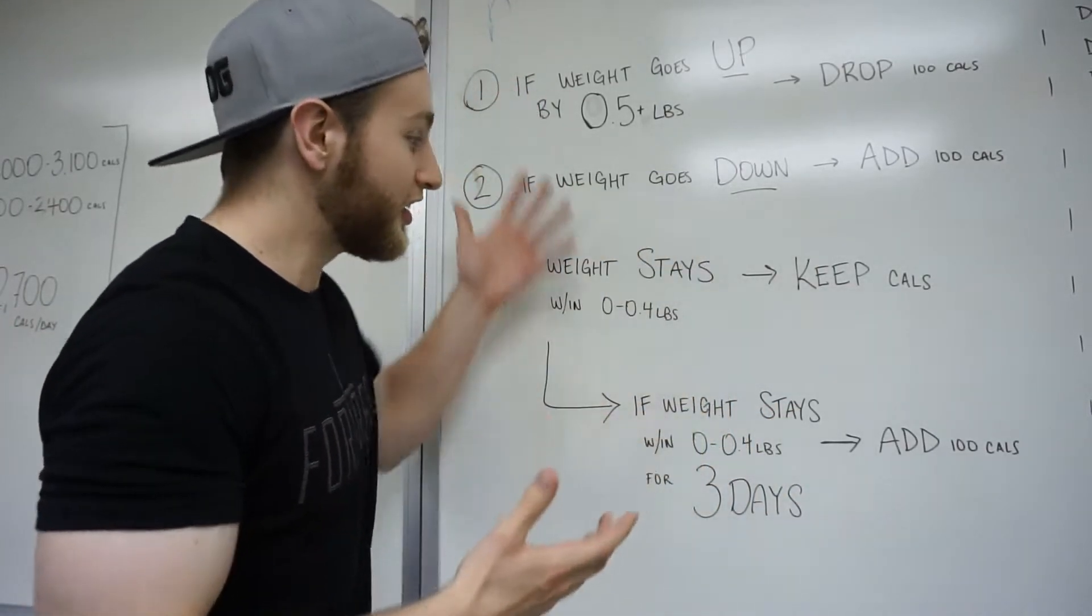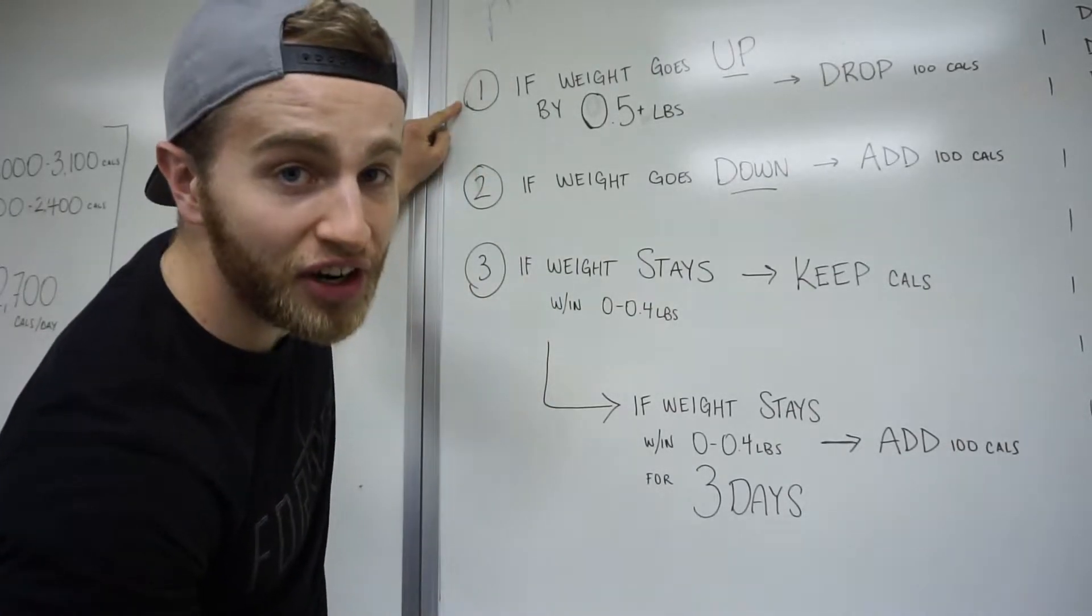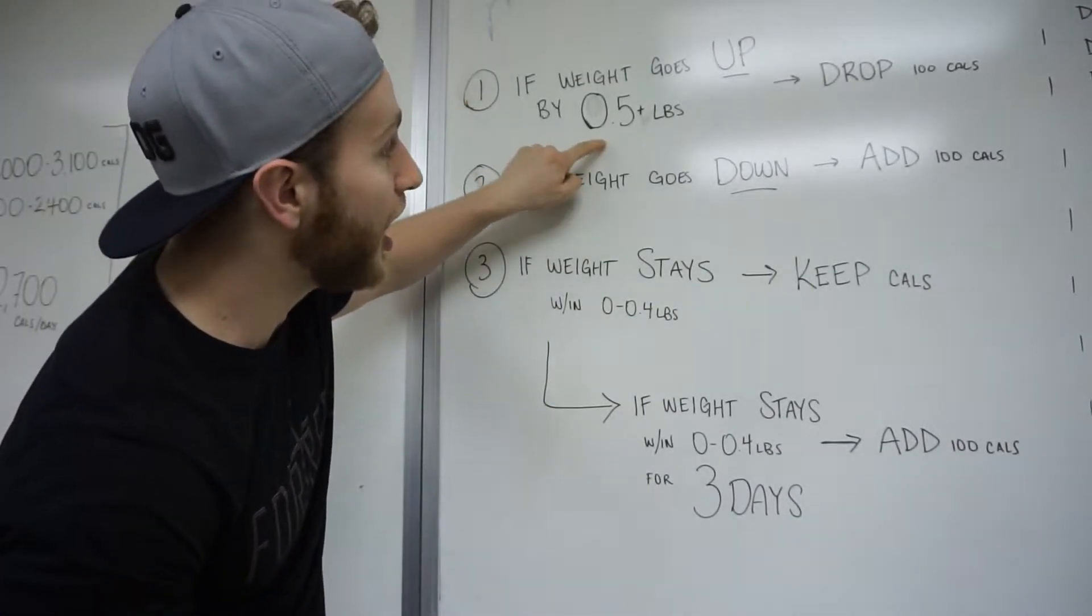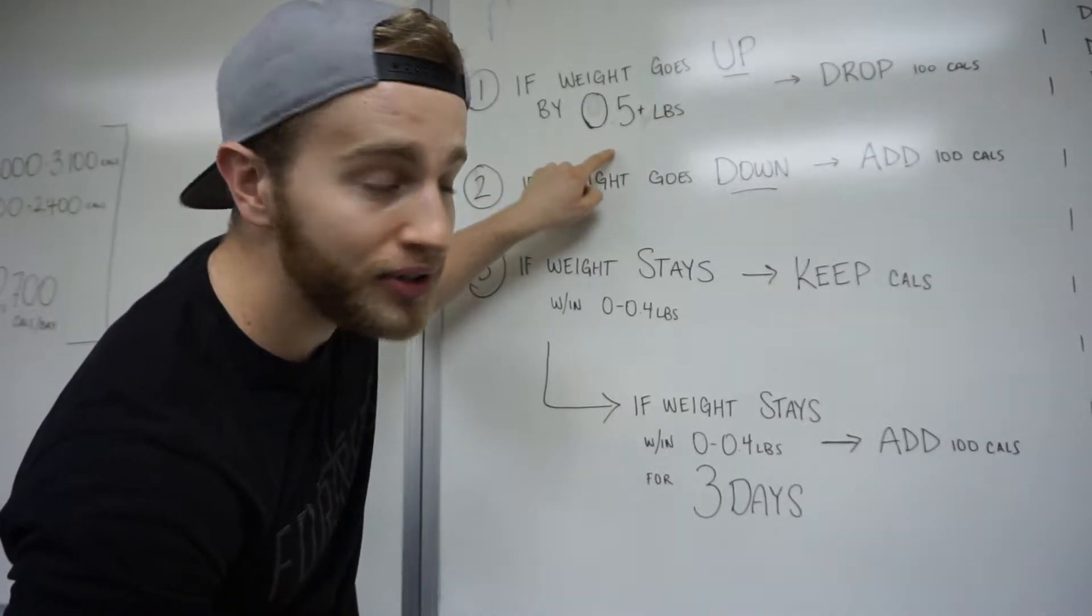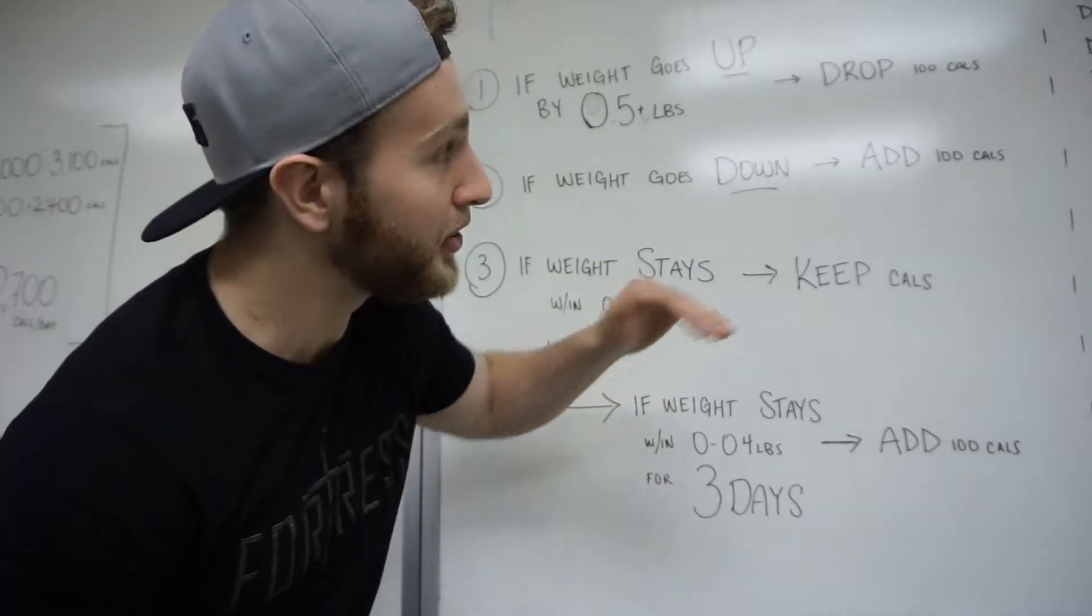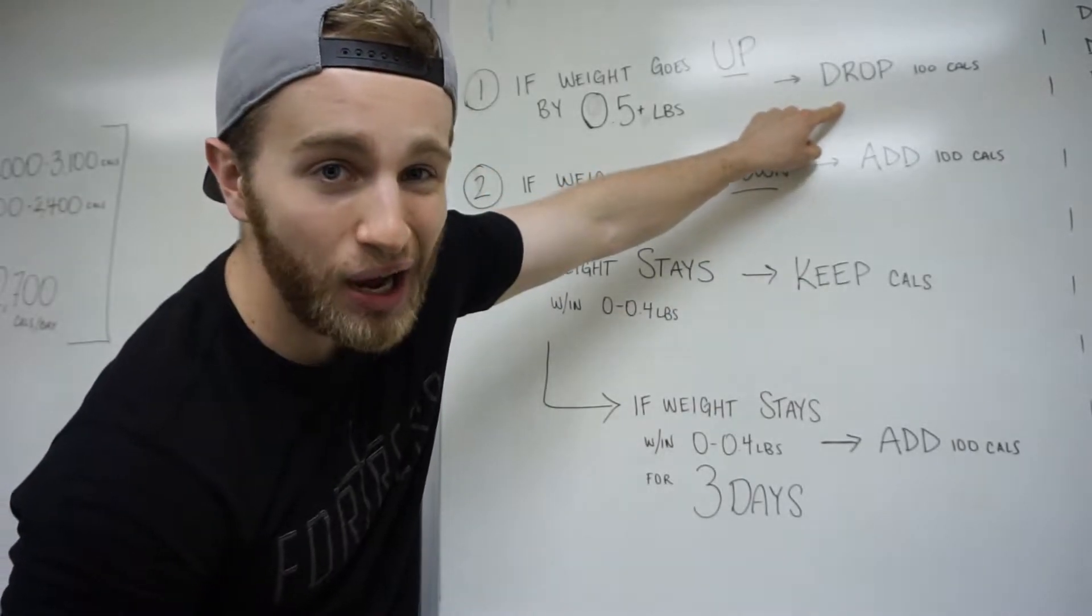So after day one, there's three options. If you find that at that 2,700 calories, your weight goes up by more than half a pound, you started too high, you might need to drop your base down a little bit, drop your calories by 100.